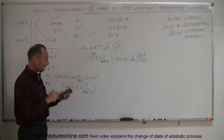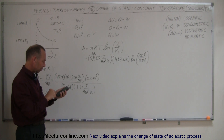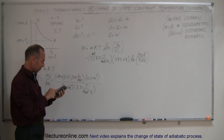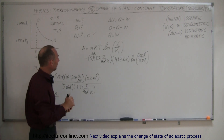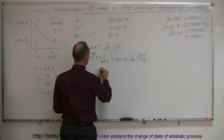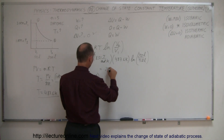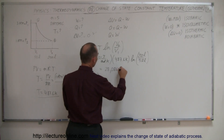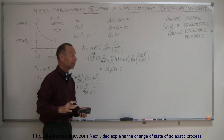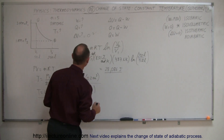We multiply by the natural log of 4, then by 8.31, then by 5. The work done by this process is 28,086 joules. That's a few more significant figures than we typically keep, but we'll leave it like that. So that's the work done.